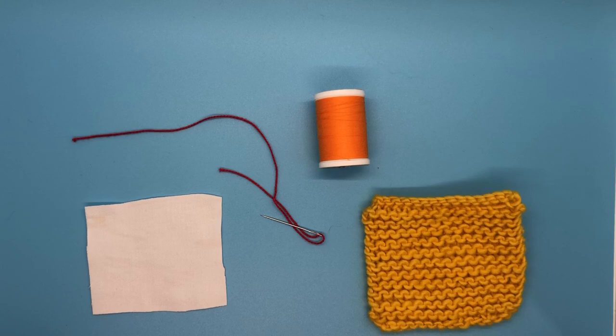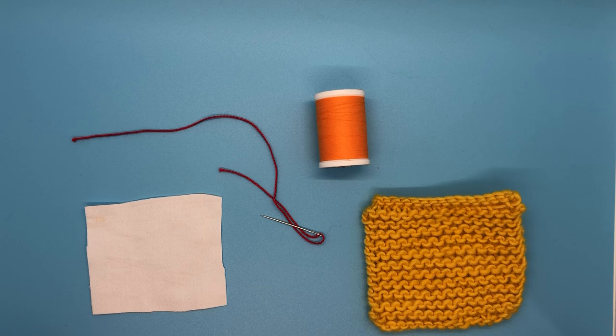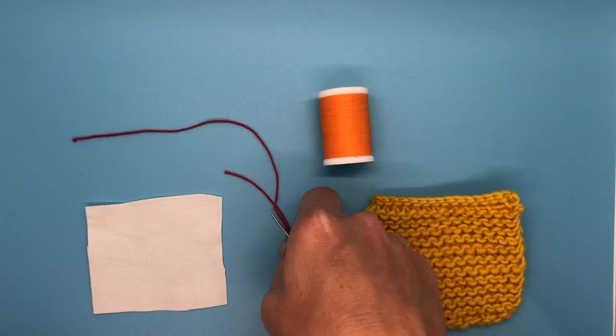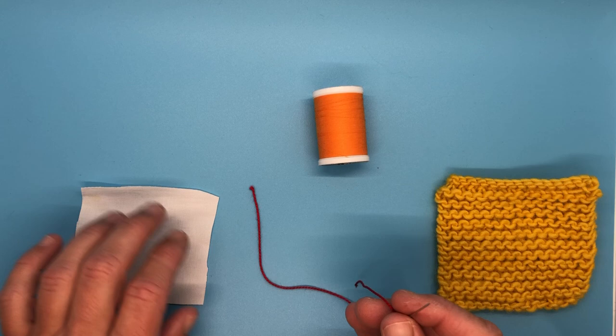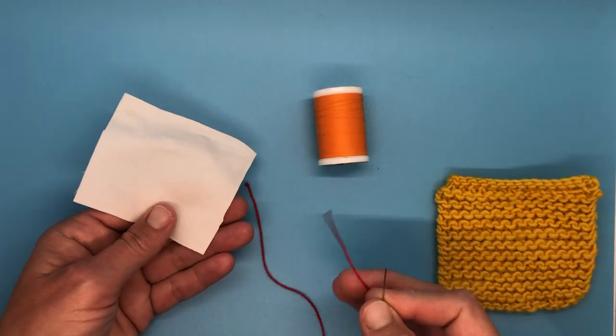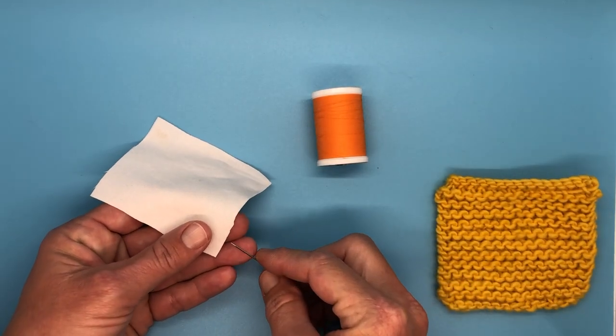This is my favorite knot to teach children for sewing. It's called a little one-two-three. I've got no knot in the end of my thread and I'm going to knot onto my fabric.